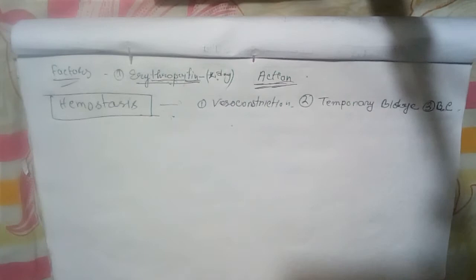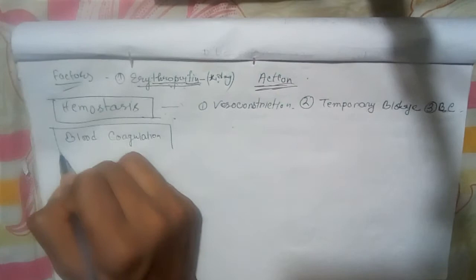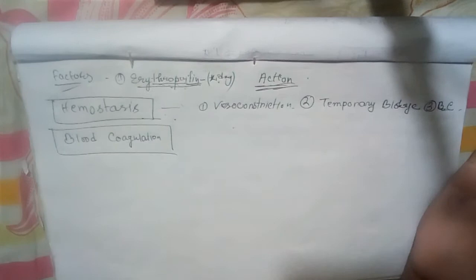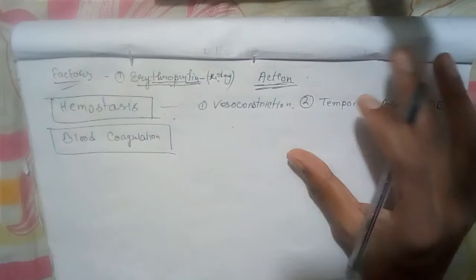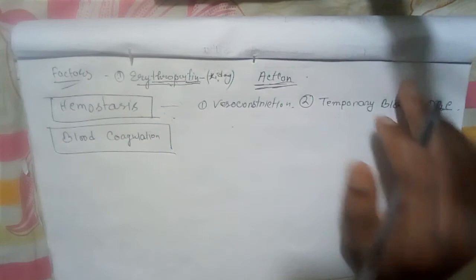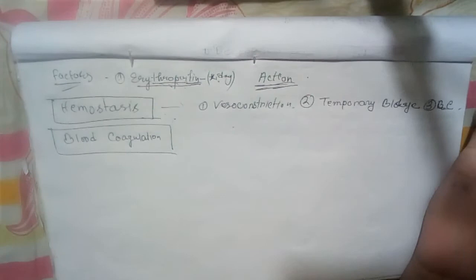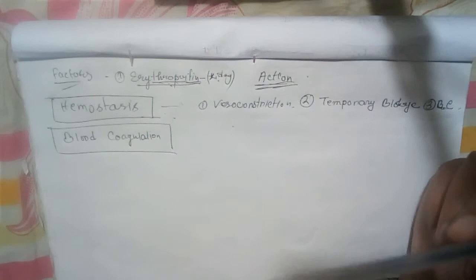Blood coagulation is also an important topic. The different factors involved in the mechanism of blood coagulation are: fibrinogen, prothrombin, thrombin, thromboplastin, calcium ions, labile factors, stable factors, anti-hemophilic factor, Christmas factor, plasma thromboplastin, Hageman factor, and fibrin-stabilizing factor.